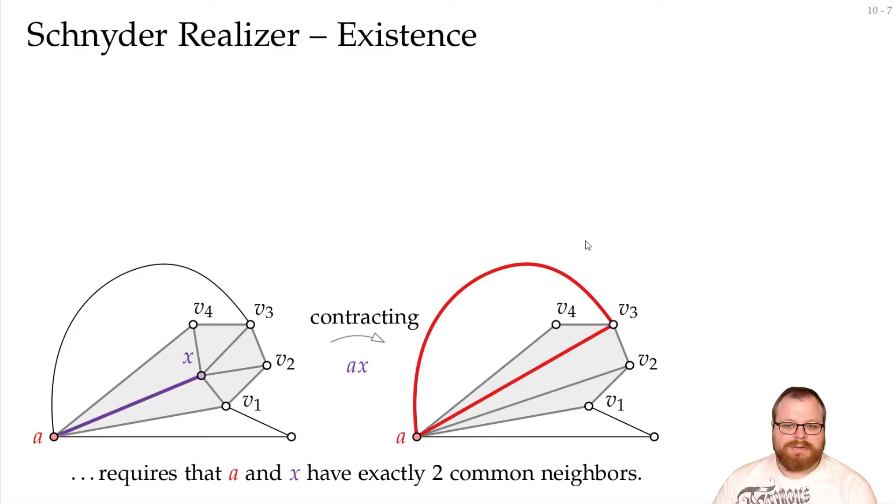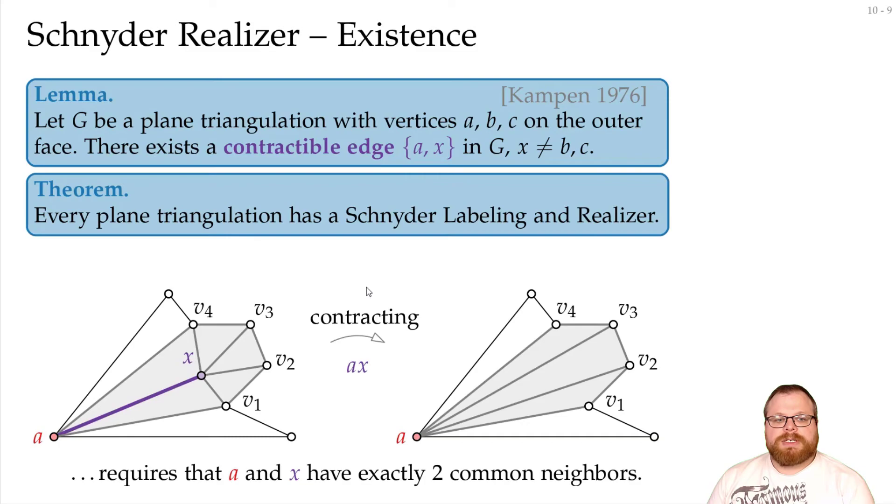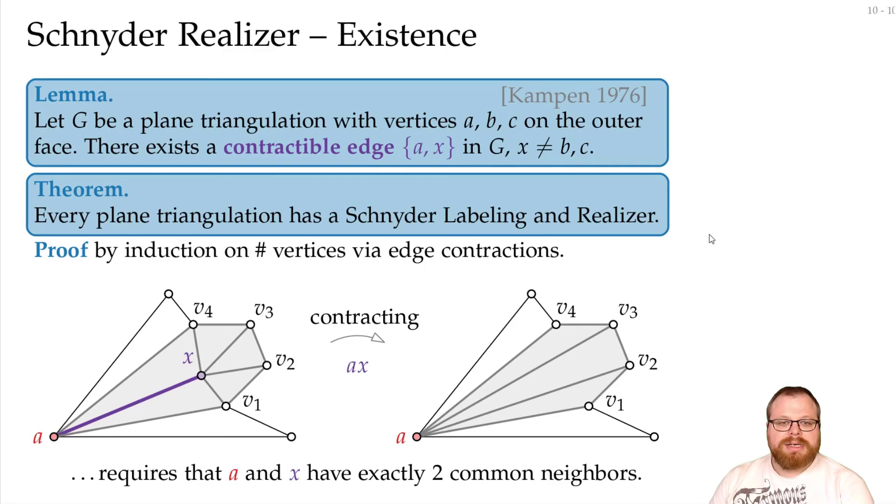So we have to remove one of those, and then we get a larger face wherever we remove this edge. And Kampen proved in 1976, that if we have a plane triangulation with three vertices on the outer face, then there is always a contractible edge, where one vertex is on the outer face, and the other vertex is in the interior. So we can always do such a contraction, until we only have the triangle left. And with those contractions, we can prove that every plane triangulation has a Schnyder labeling, and by this a Schnyder realizer. And we do that by induction on the number of vertices via edge contractions.